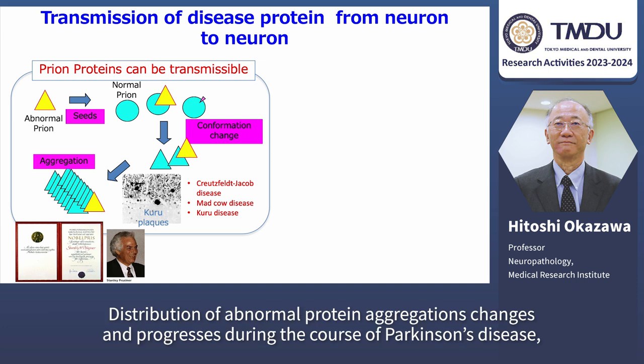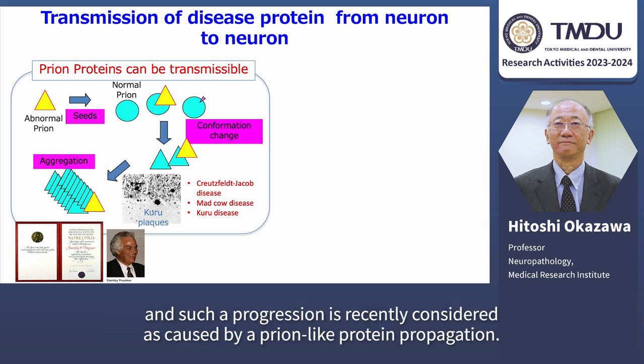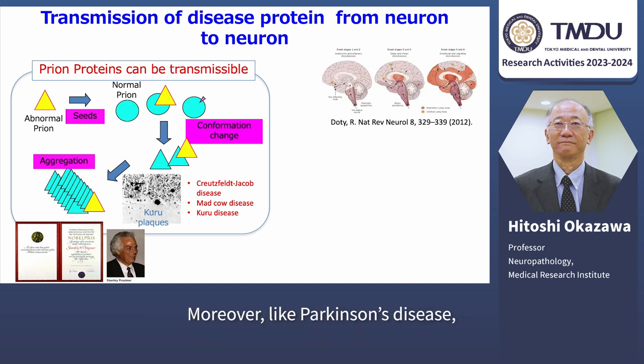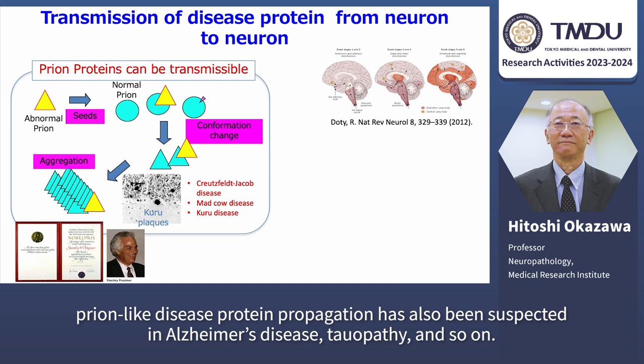Distribution of abnormal protein aggregations changes and progresses during the course of Parkinson's disease, and such progression is recently considered as caused by a prion-like protein propagation. Moreover, like Parkinson's disease, prion-like disease protein propagation has also been suspected in Alzheimer's disease, tauopathy, and so on.